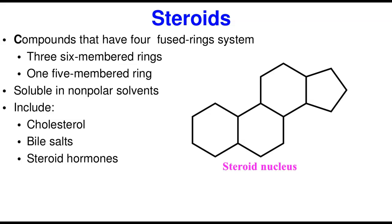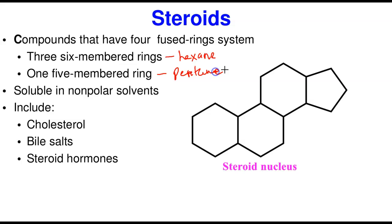Steroids are compounds with four fused ring systems. Three of those rings are six-membered rings — they look like hexane rings — and one five-membered ring, which is a pentane ring. These three hexane rings are fused together with the pentane ring to form what we call the steroid nucleus or the steroid ring system.